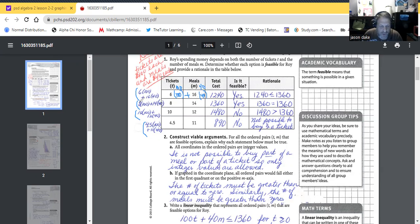Let's do eight and 14: eight tickets, 14 meals. 8 times 100 plus 14 times 40 equals $1,360. All right, on the money. Yes, it's feasible. $1,360 is equal to $1,360.